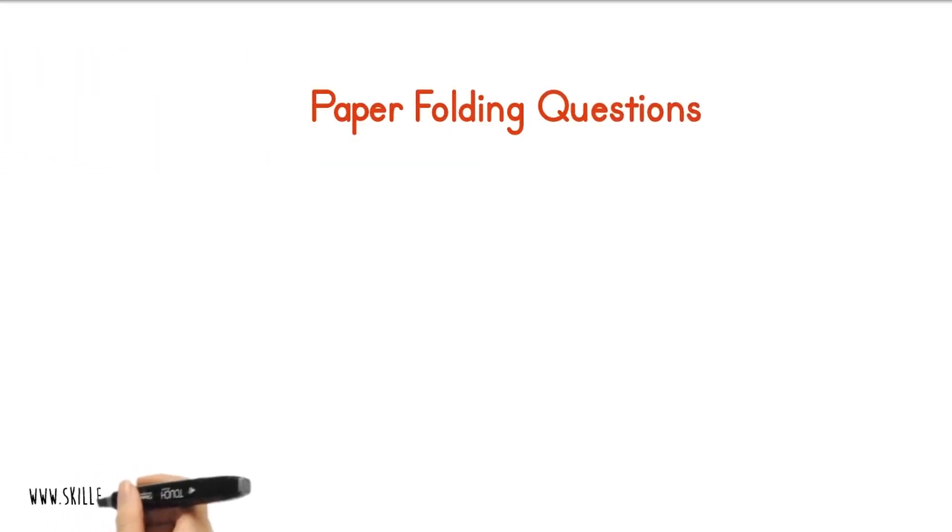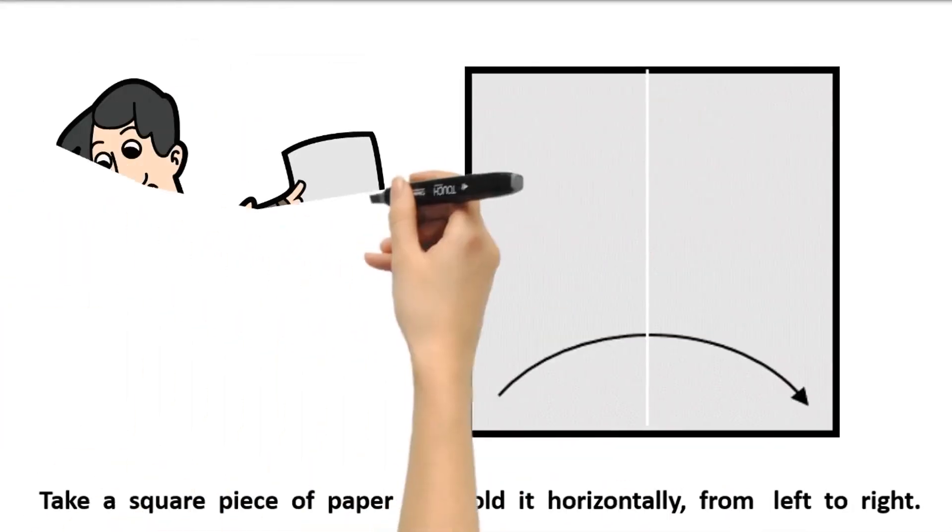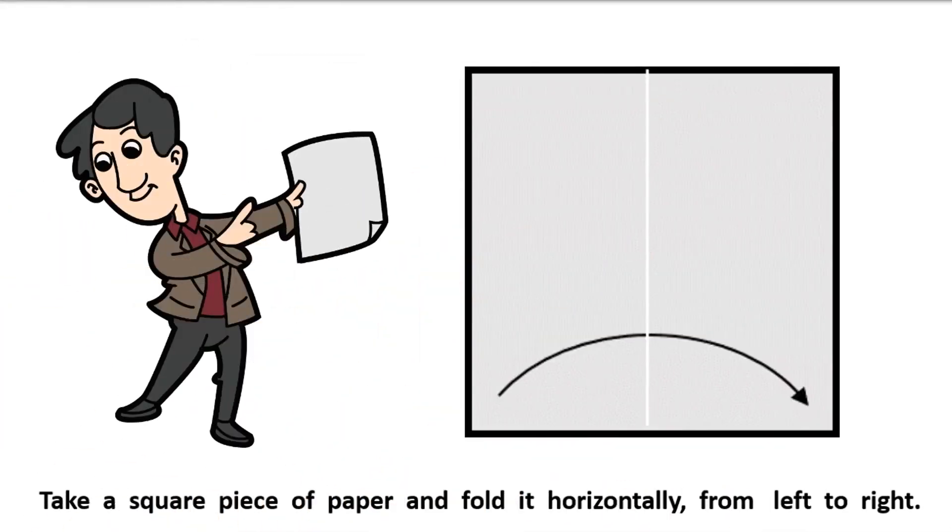Paper folding questions. Number 3. Take a square piece of paper and fold it horizontally, from left to right.